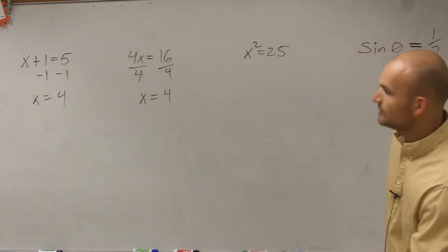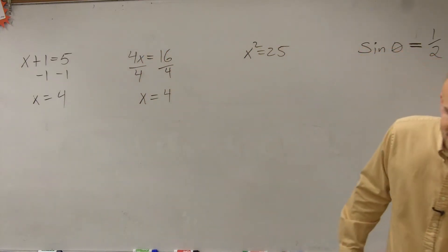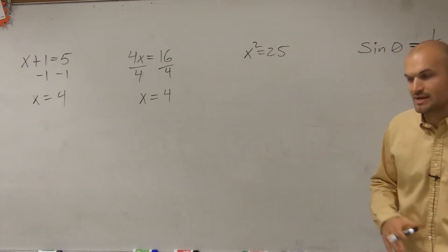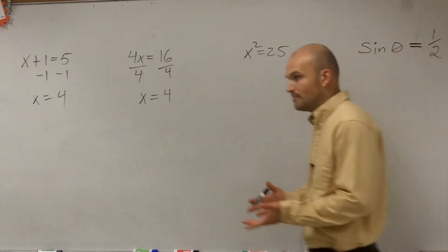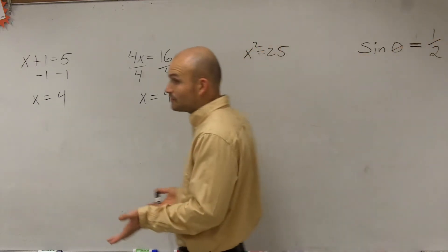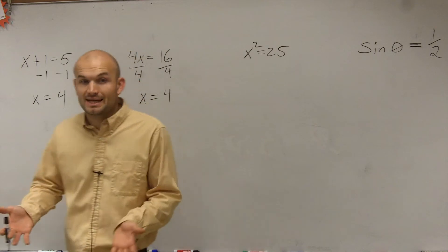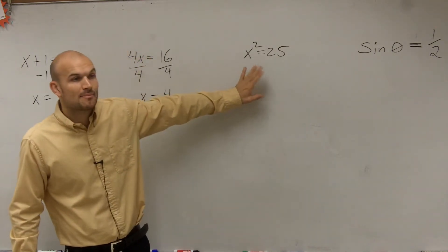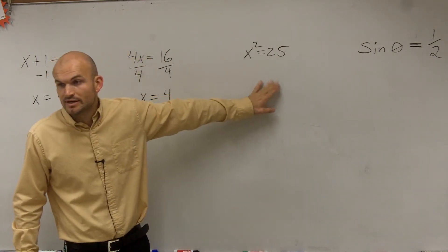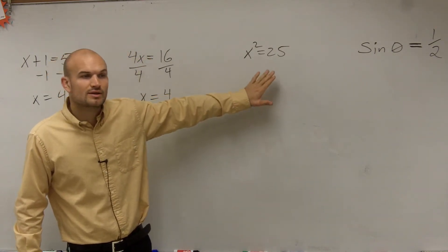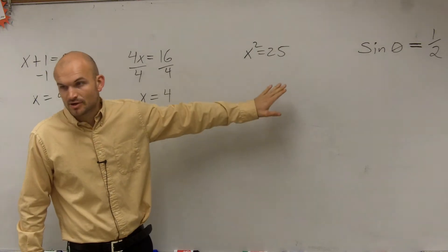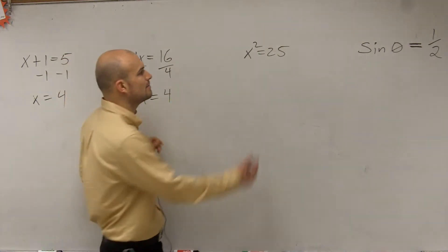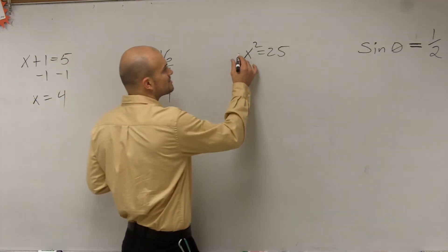Then we started working with a little bit more besides our basic four functions — we looked at squaring. We're still applying an operation of squaring. So we look at the inverse operation of squaring and we say the inverse operation of squaring is square root.